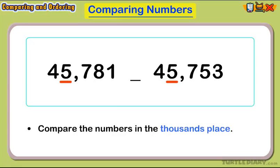The 5 is in the thousands place for both numbers. This doesn't help us determine which number is bigger, so we move to the next place value.